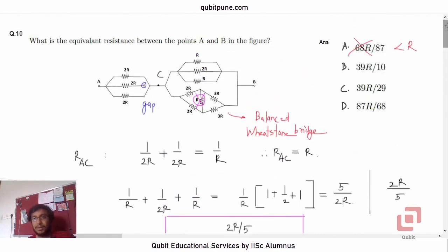And what is the option? 39R upon 29 is option C. So the correct option is C.